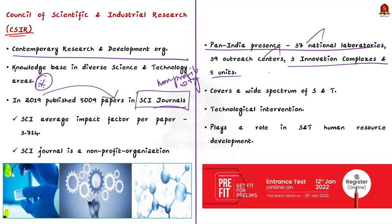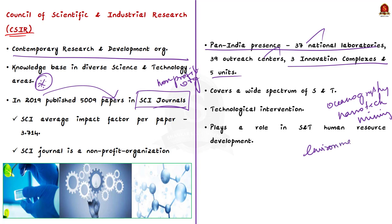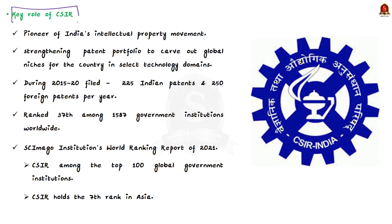CSIR covers a wide spectrum of science and technology — from oceanography, geophysics, chemicals, drugs, genomics, biotechnology, and nanotechnology to mining, aeronautics, instrumentation, environmental engineering, and IT. It provides significant technological intervention in areas including environment, health, drinking water, food, housing, energy, and farm and non-farm sectors. CSIR also plays a noteworthy role in science and technology human resource development.